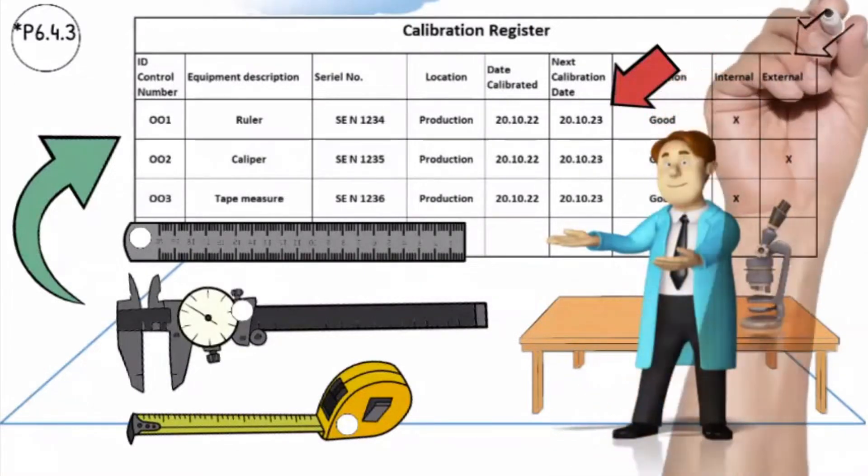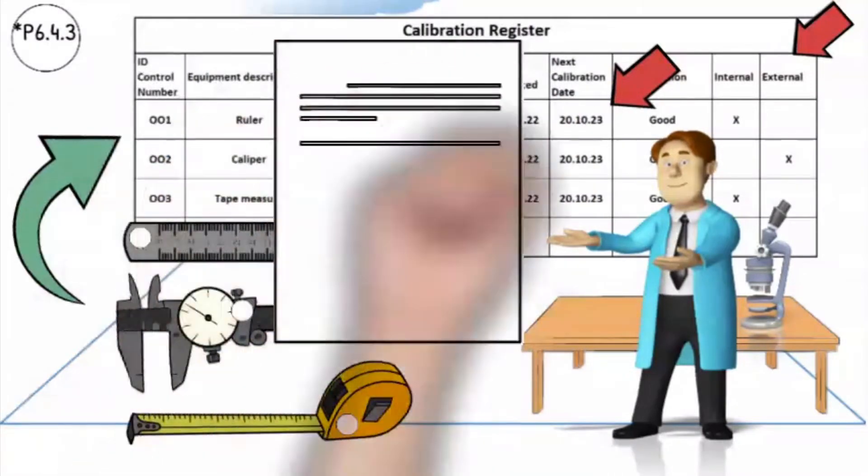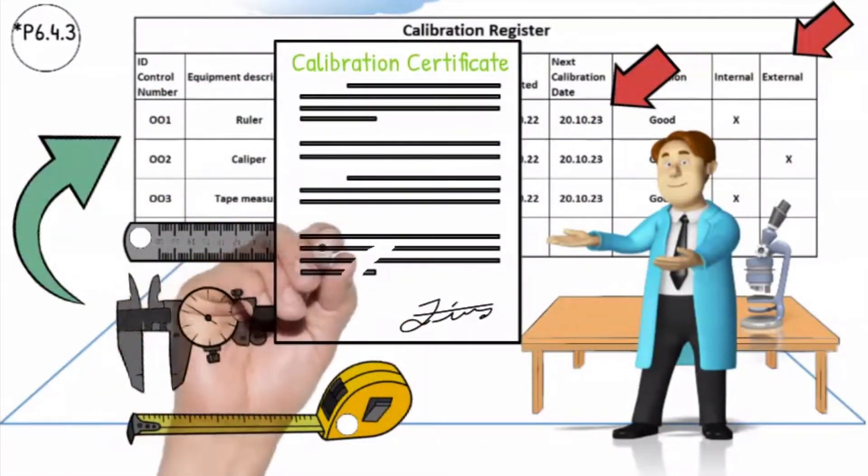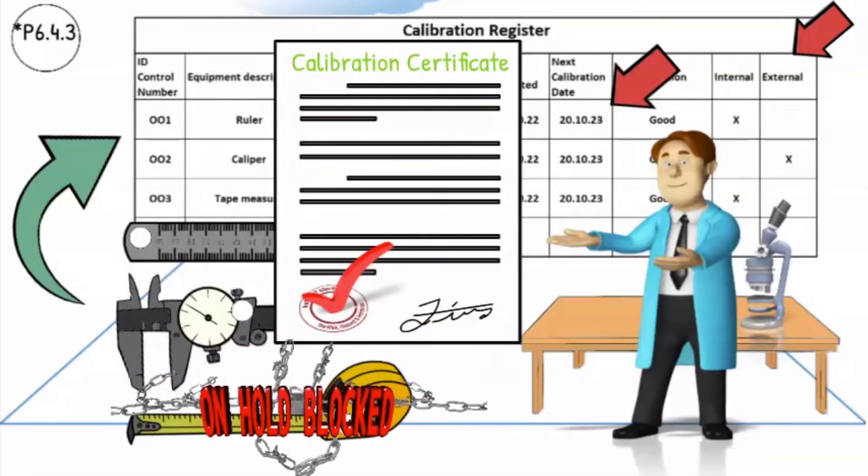The technician also has to ensure that the external laboratory is qualified to calibrate the equipment and that the calibration certificate shall include the mark of the national accreditation body. All measuring and test equipment that is out of calibration or damaged must be blocked and taken out of circulation.